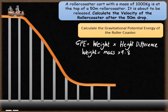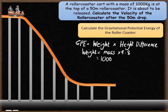The first step is to calculate the gravitational potential energy of the roller coaster. This is done by taking the weight of the roller coaster and multiplying it by the height difference — from where it starts to where it finishes. The weight of the roller coaster isn't equal to its mass. The mass is a thousand kilograms, but to work out weight you take the mass of a thousand kilograms and multiply it by 9.8. That gives you a weight of 9,800 newtons.